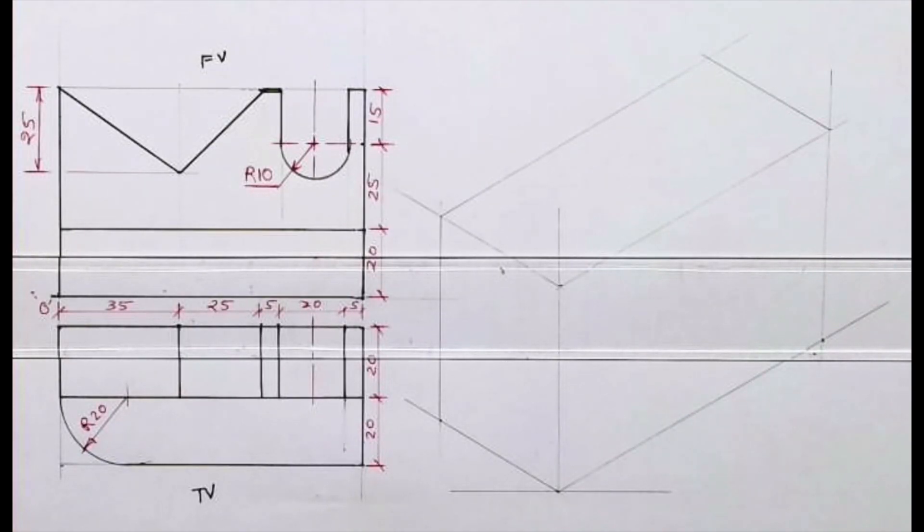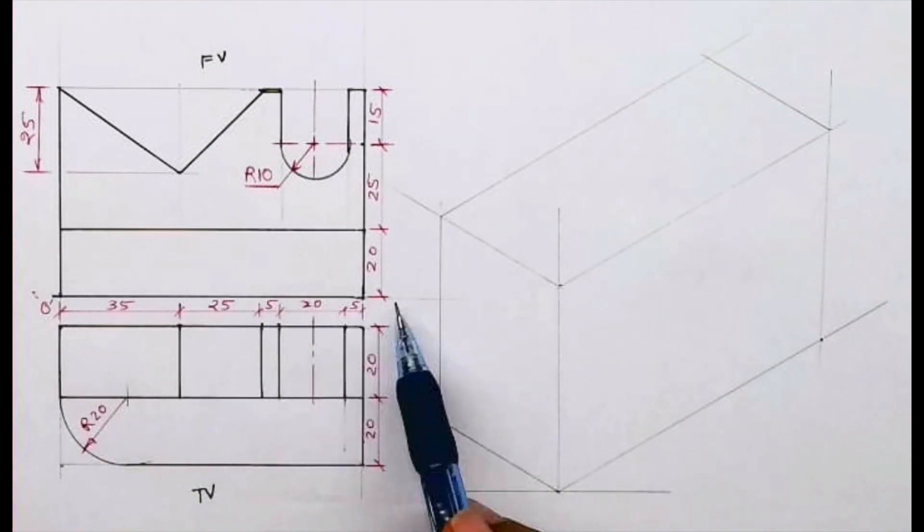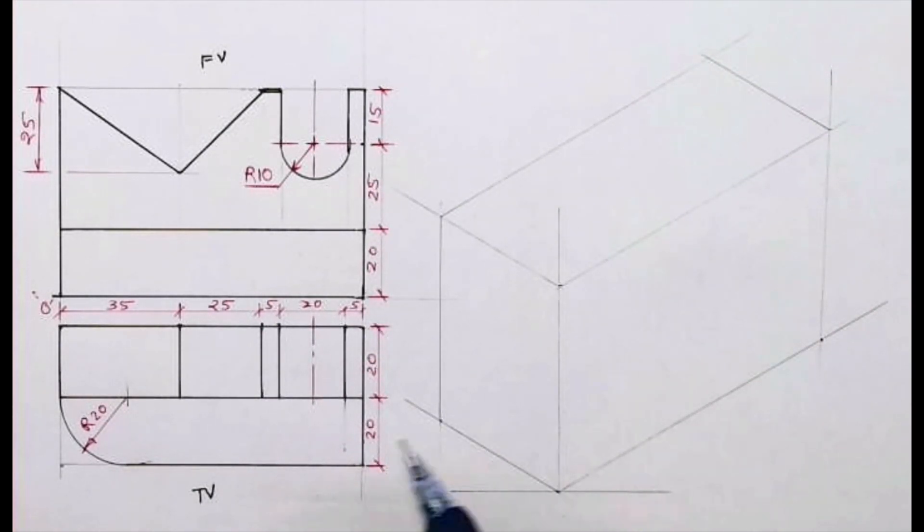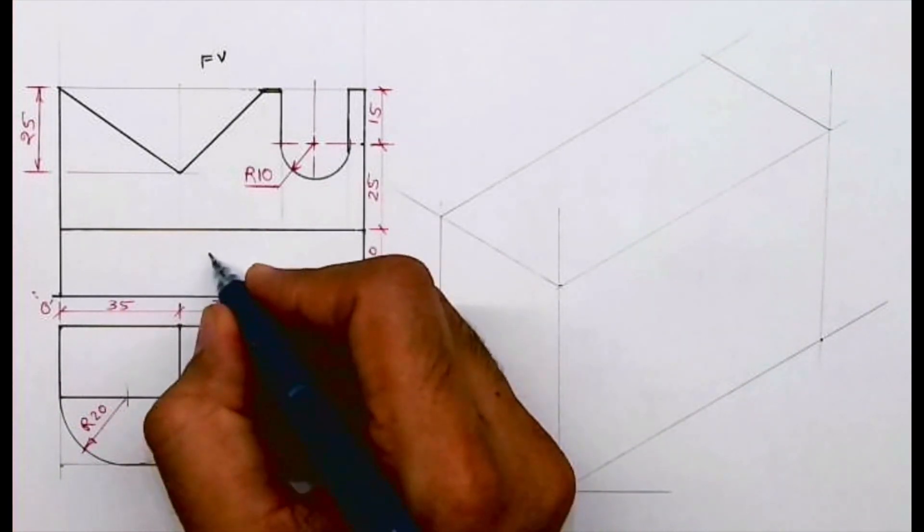Welcome to technical drawing. Today we'll see this sum in isometric view. If you see the front view and top, length is given as 90, I'll take on the right side. Height and width is 40, that I'll take on the left. First I will draw a box and then we'll start.